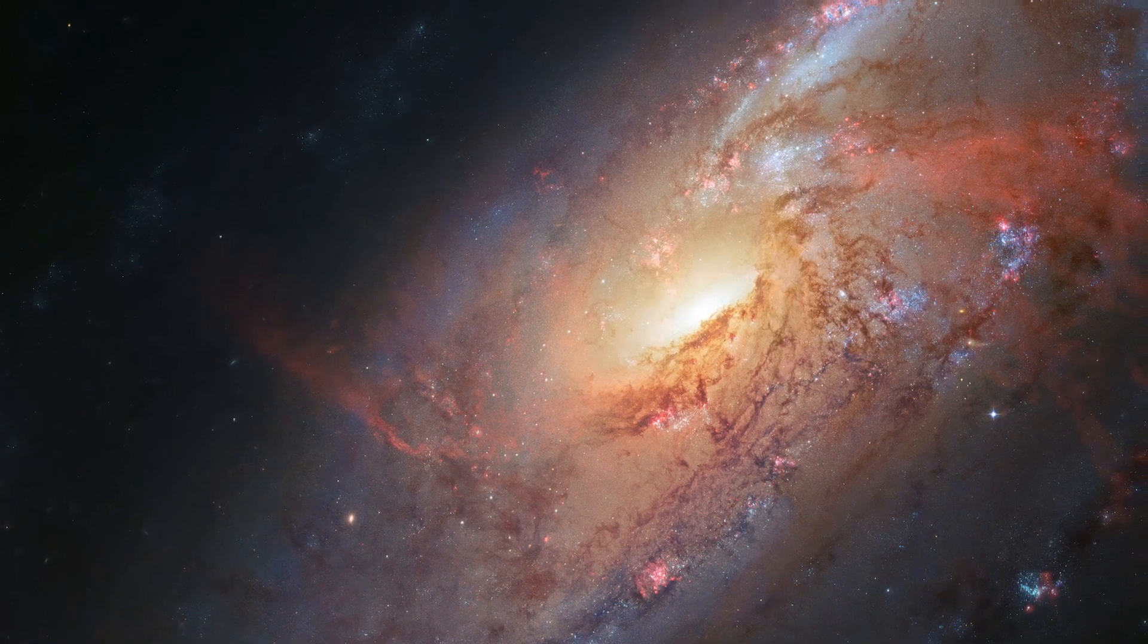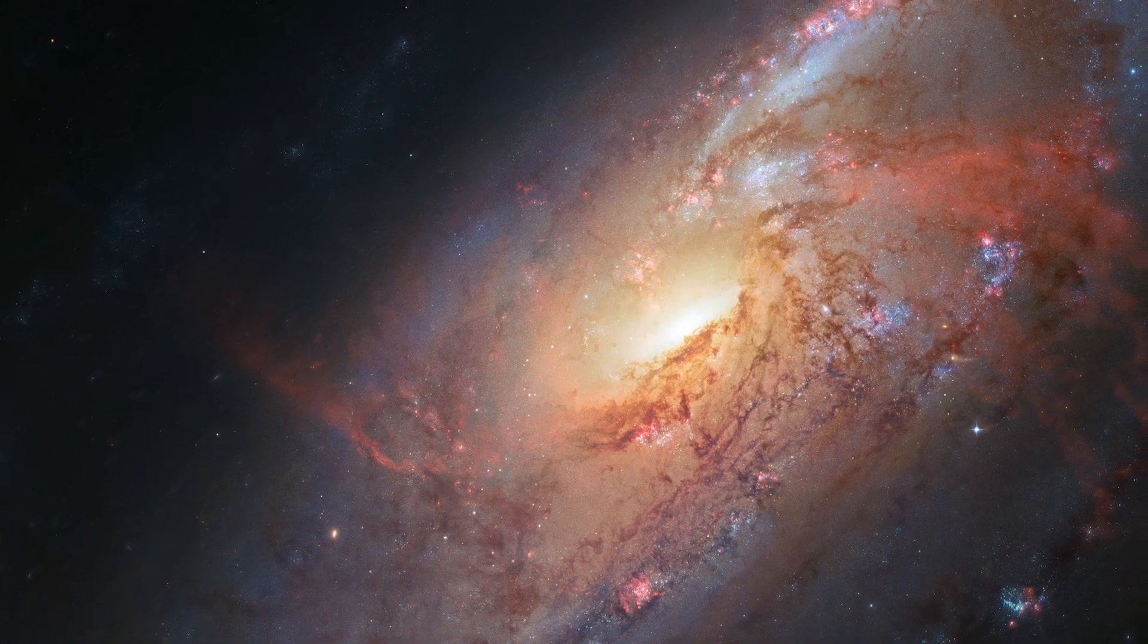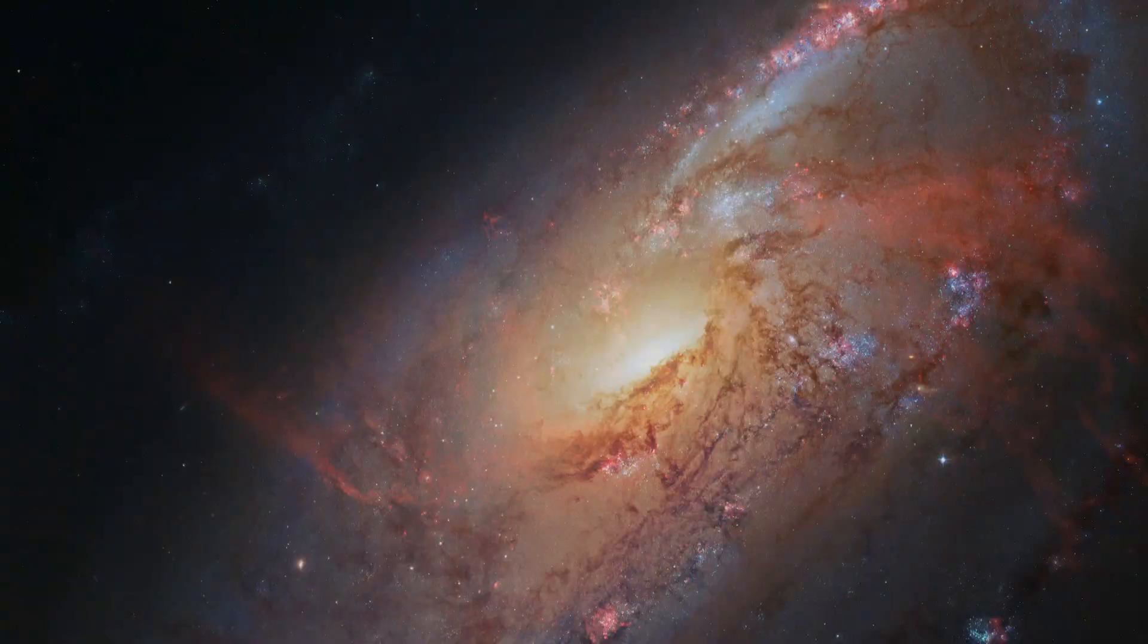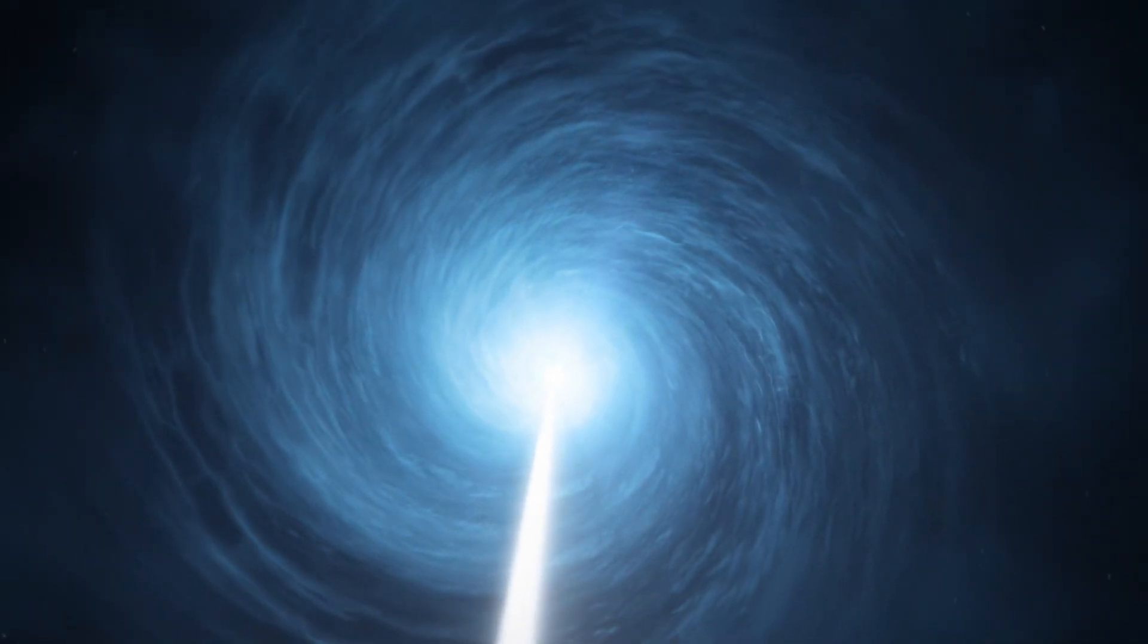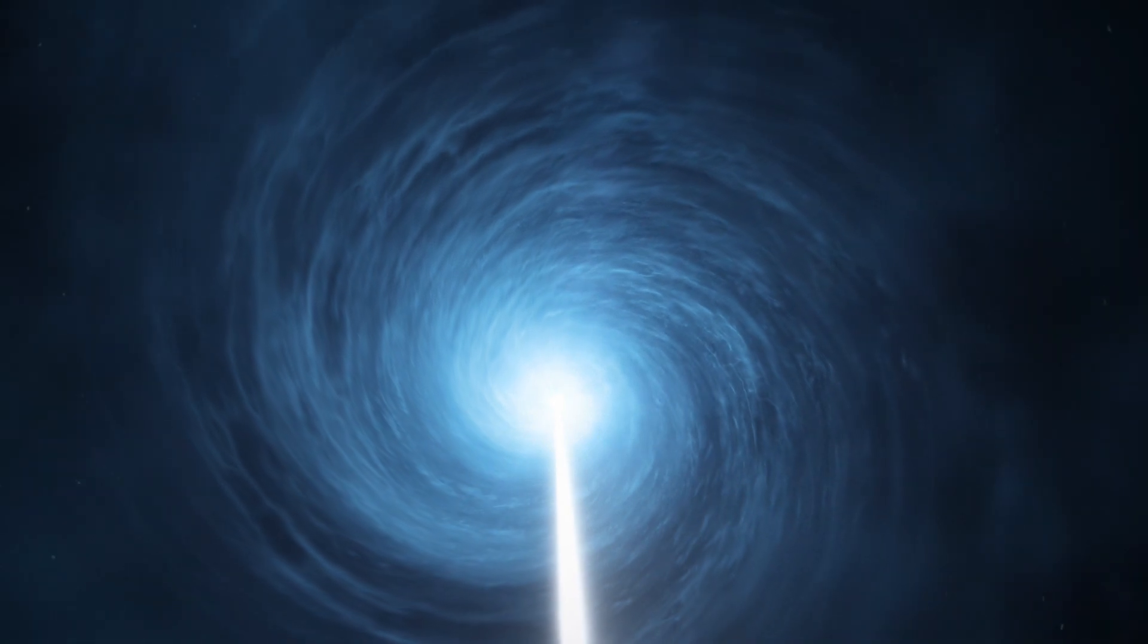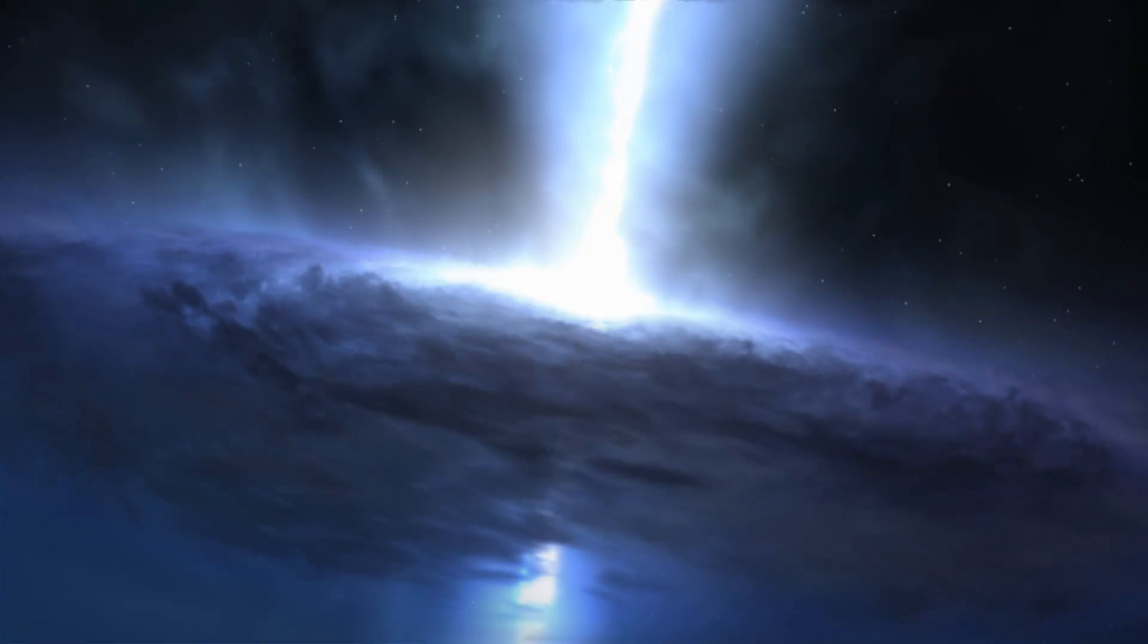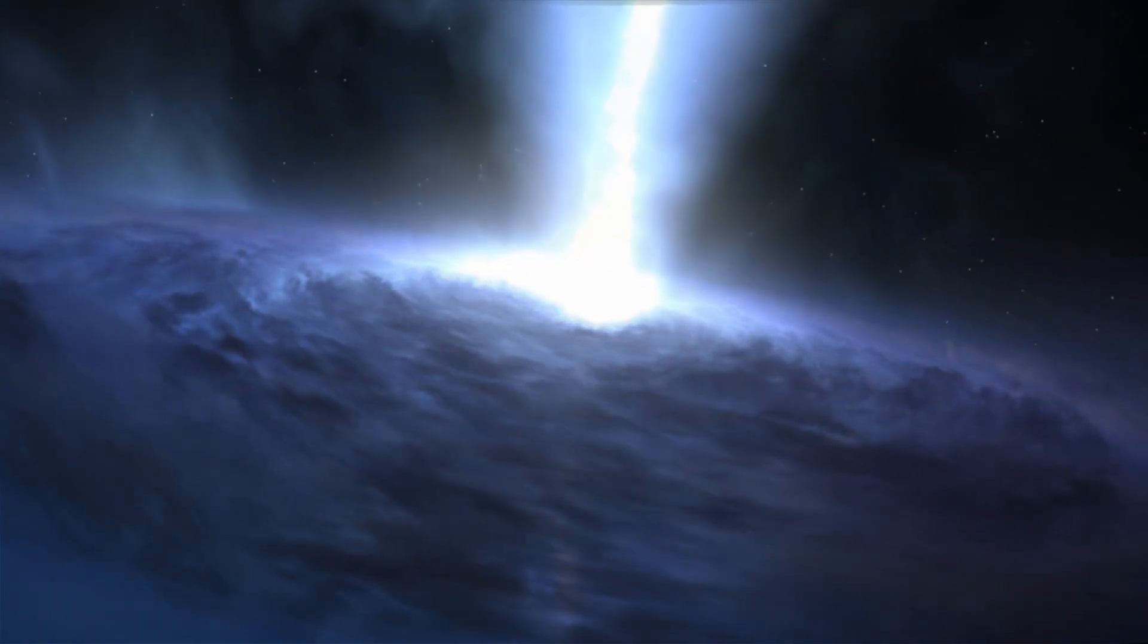Although it may not look particularly unique, some of its features have baffled astronomers for years. Messier 106 has a supermassive black hole at its center. Although this is true for most galaxies, this black hole is particularly active and hungry, gobbling up nearby material at a startling rate.